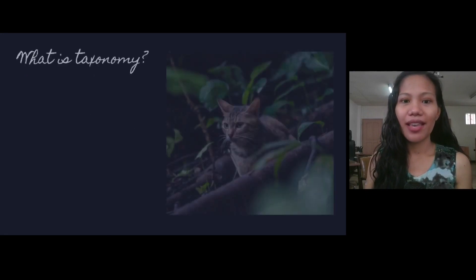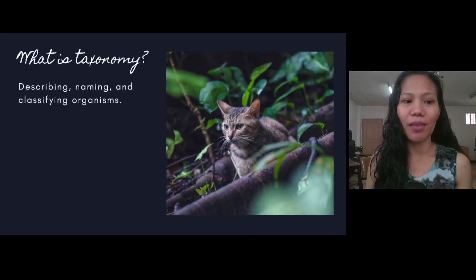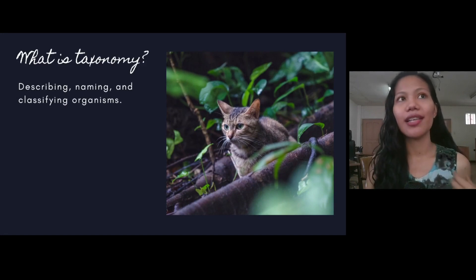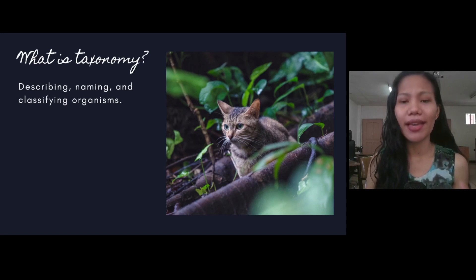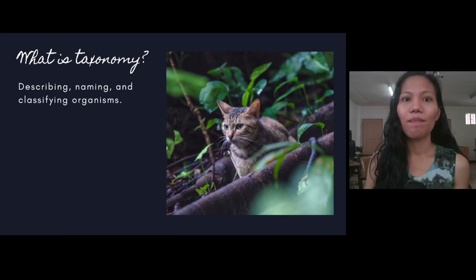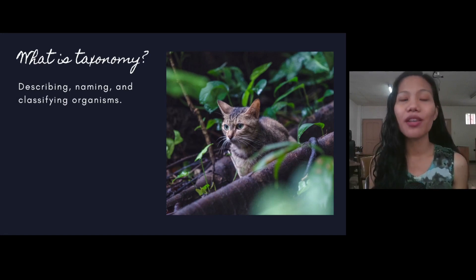What then is taxonomy? According to Ernst Mayr, taxonomy began as an applied science. Why was it applied? Because it was for medicine and survival — either you eat the right food or you die. So it became a technique of identification.